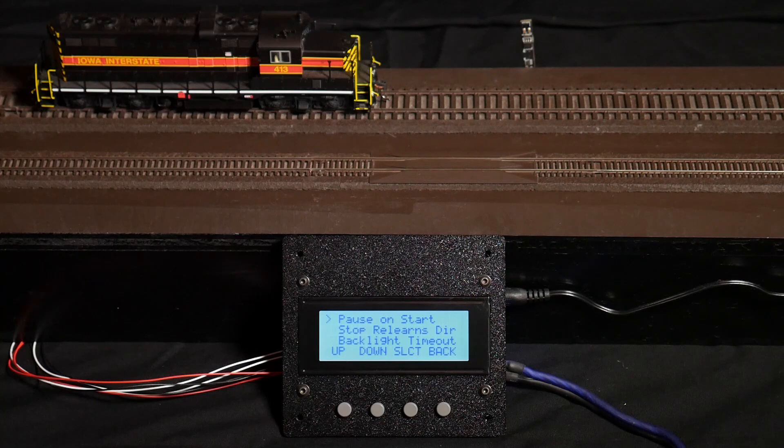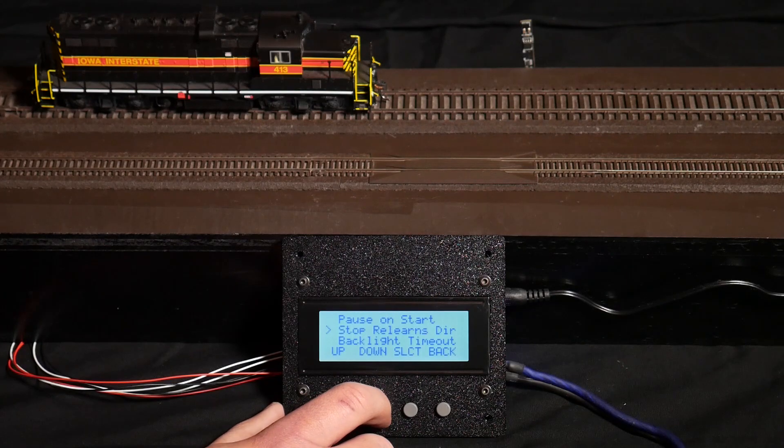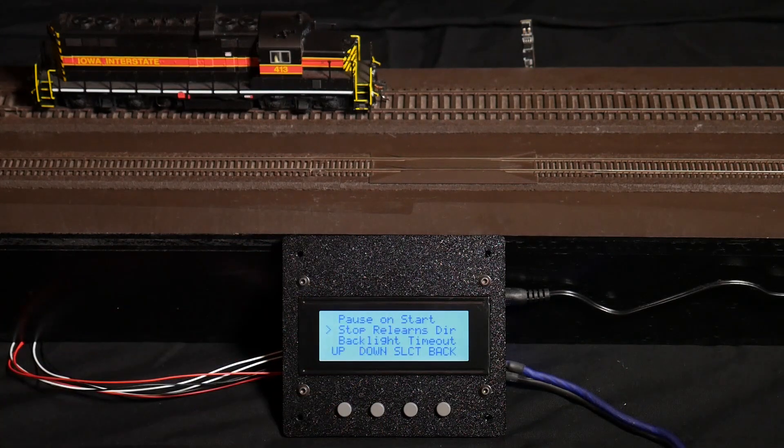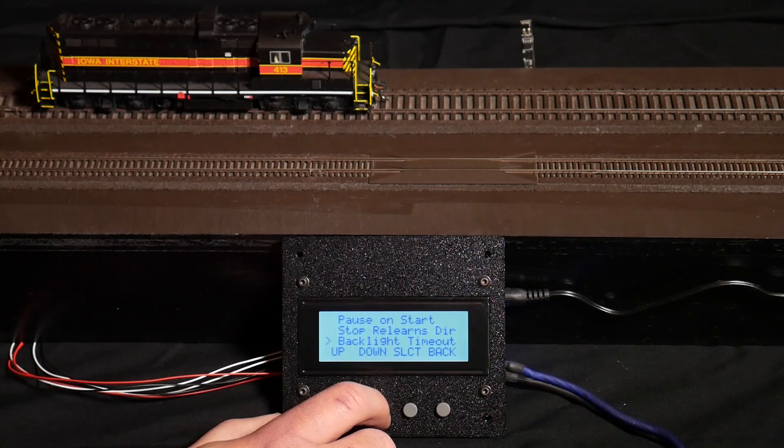You can configure so that upon stopping the locomotive relearns which end sensor is where, because if I put this locomotive on the other direction, front would actually be to the left rather than to the right. And there's also configuration about the backlight timeout such that you don't actually have to have this thing lit on the layout the whole time. You can tell it to shut the backlight off so you don't have to look at it.